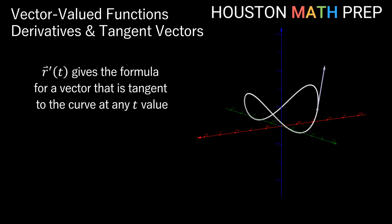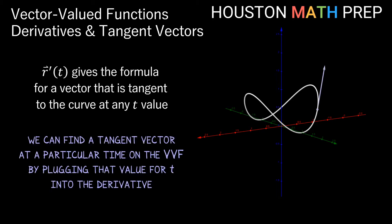Derivatives of vector-valued functions help us find tangent vectors. When we find r prime of t, that gives us another vector-valued function whose formula tells us the tangent vector to the curve at any t value where it's defined. If we want a tangent vector at a particular t value, we differentiate and then plug in that specific t value into the derivative.